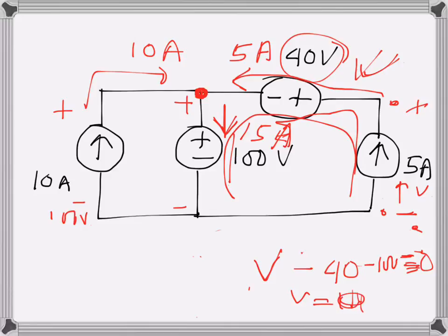140 volts across the 5 ampere current source. So these are the currents and voltages across each of these elements—I think I've covered all of them.